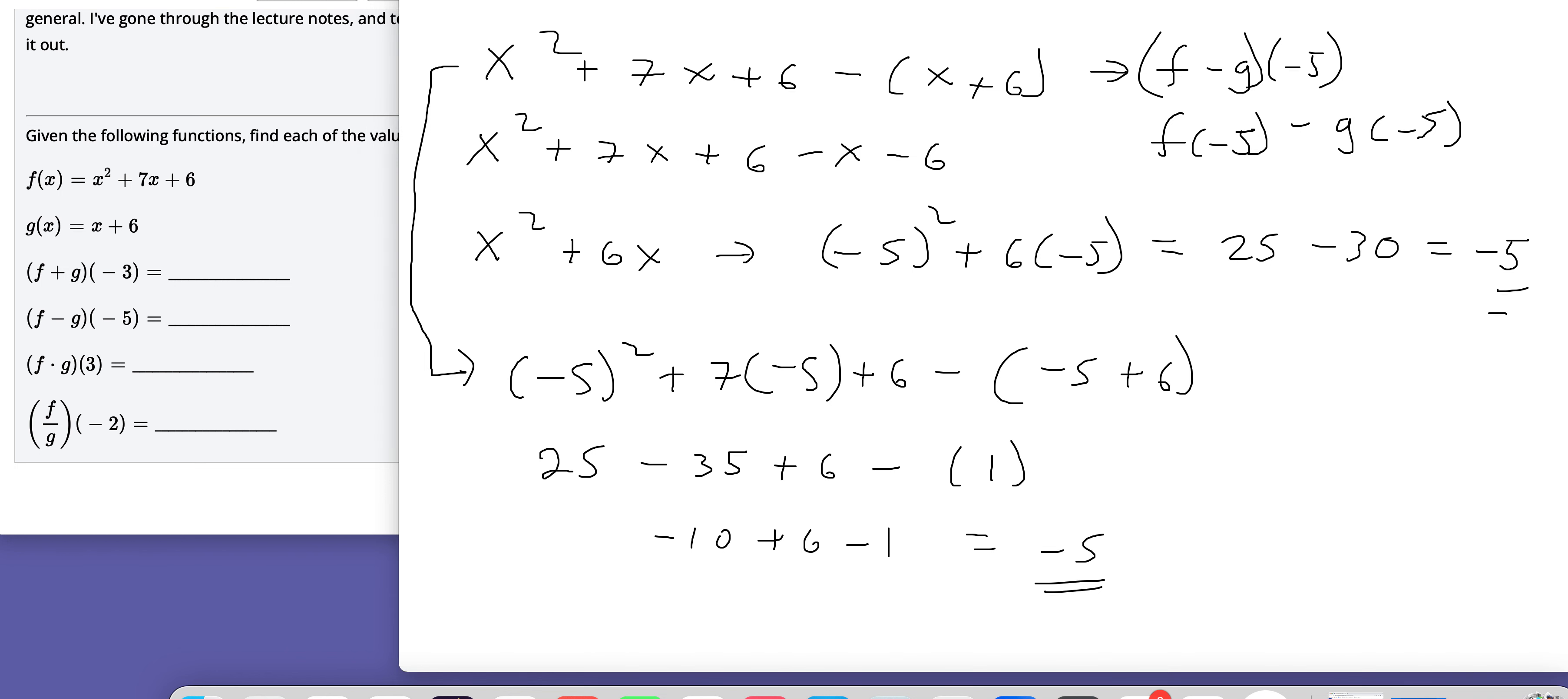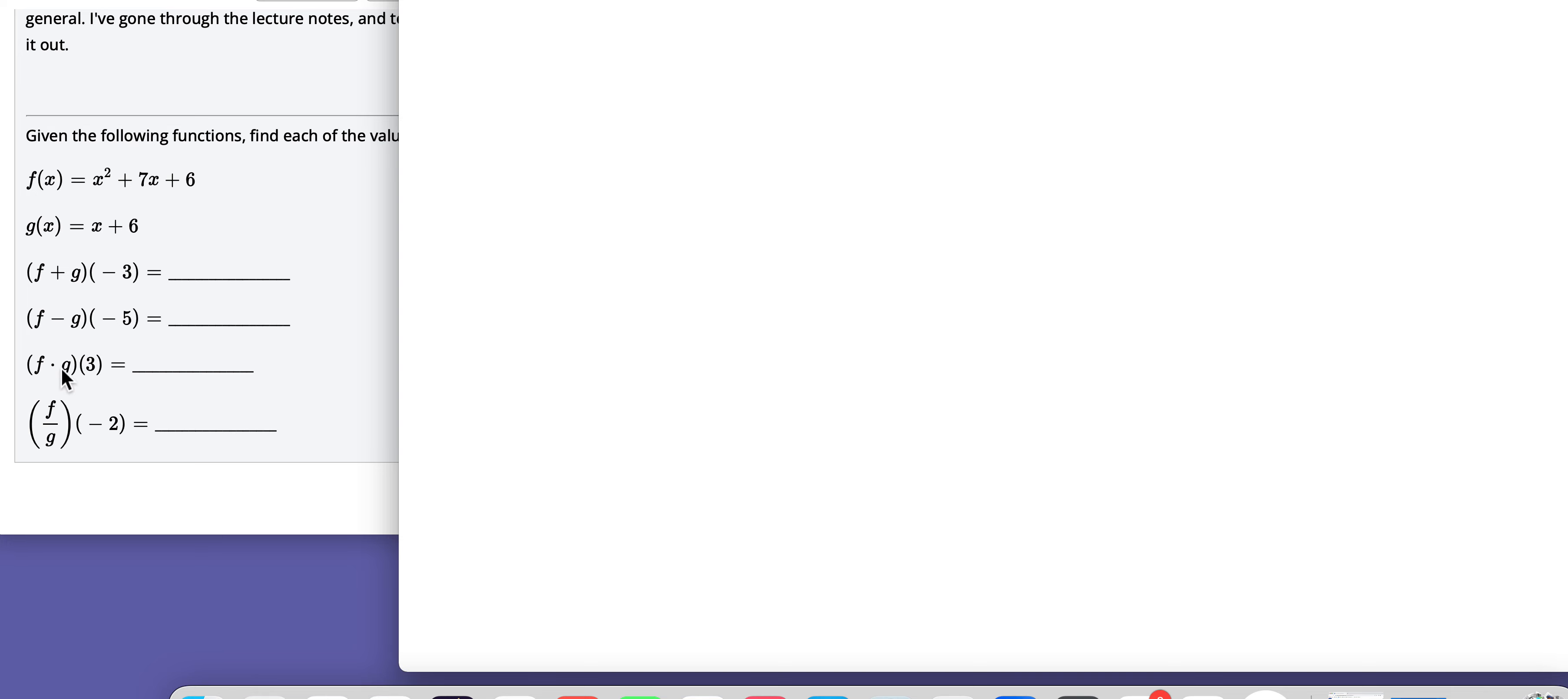Let me clear all this mess. So if I'm doing F times G of 3, I'm going to think of that as F of 3 times G of 3. So I'm just going to write out what I'm plugging into first, just so you can see it a little bit clearer.